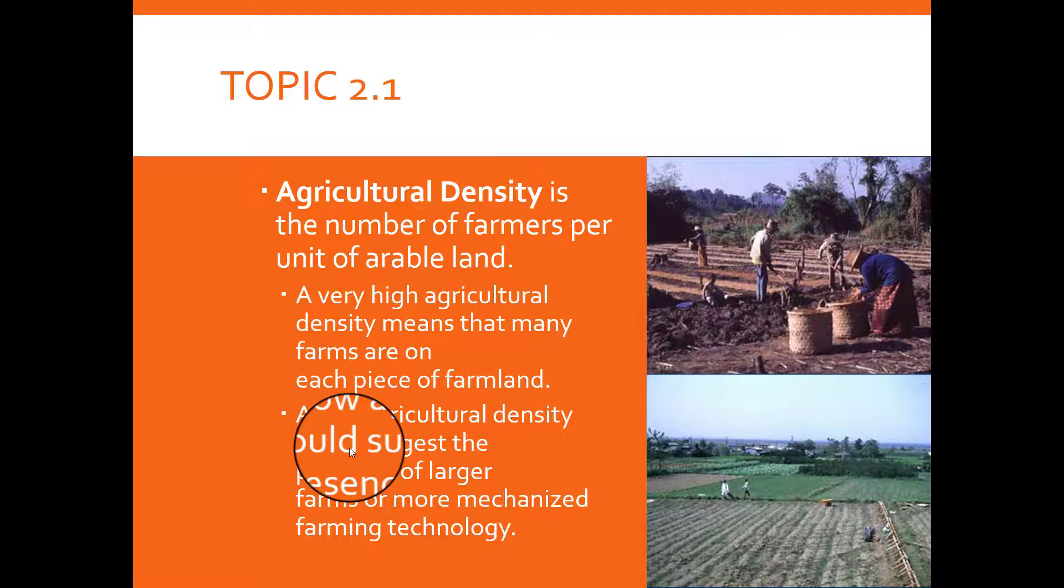Which leads us to agricultural density. Agricultural density is the number of farmers per unit of arable land. So now we're, instead of looking at just people, we're looking specifically at the farmers who live on the farmland. A very high agricultural density means that farms are actually on each piece of farmland and there are people that are tending to that particular farm. Low agricultural density suggests that usually there's a presence of a larger farm and more mechanized farming technology.